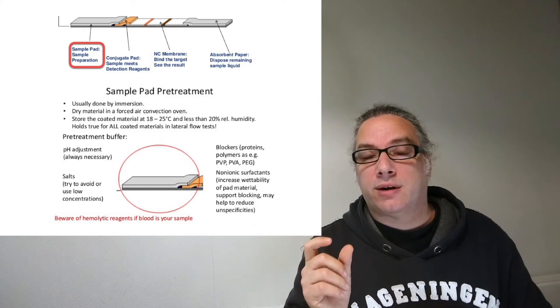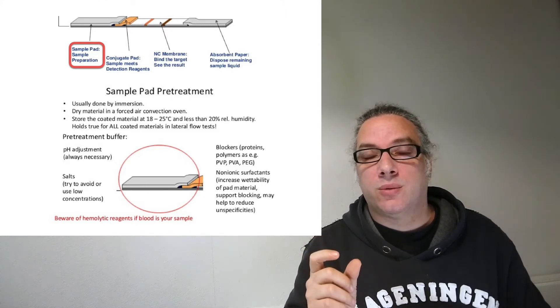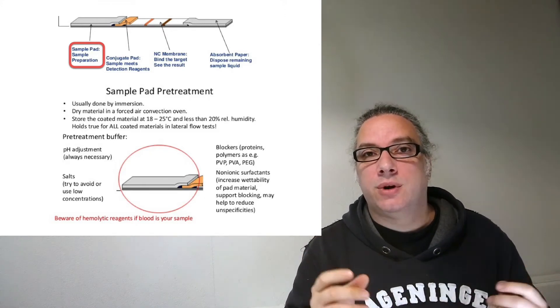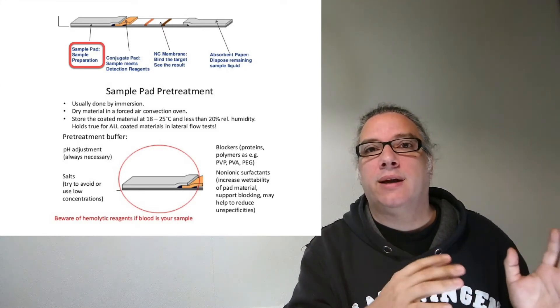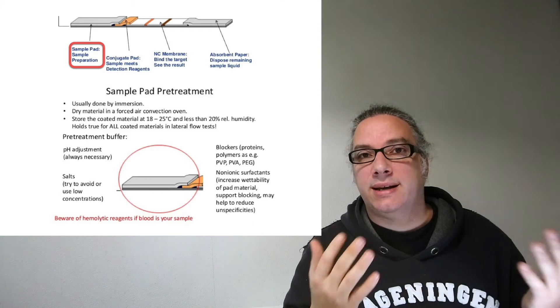This is where all the sample pretreatment happens. You can also use binders for other molecules, so if you want to remove some molecules from your sample, you can add binders and then your sample is cleaner.